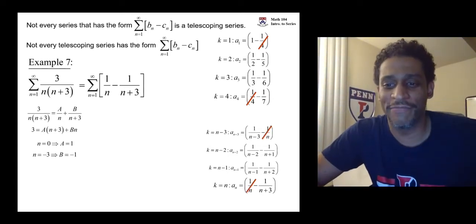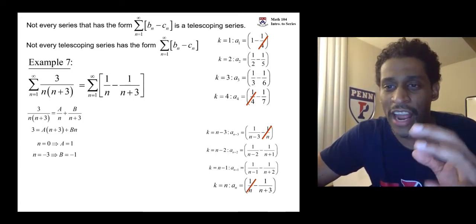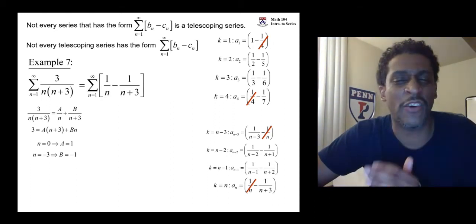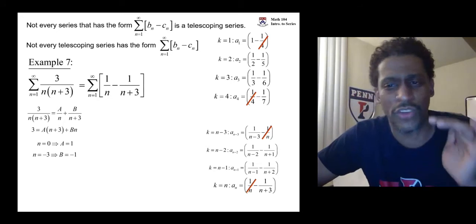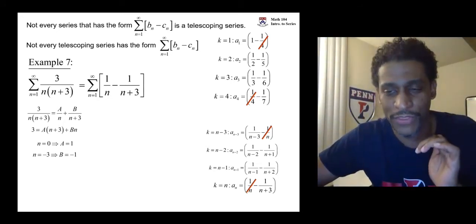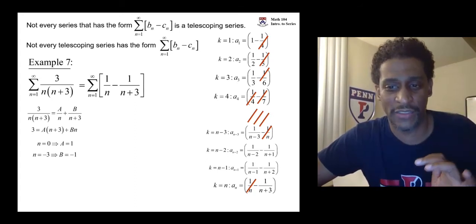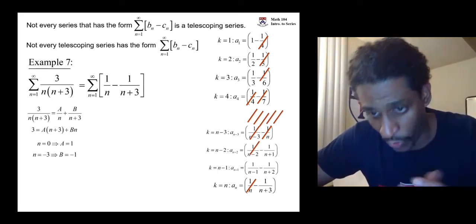It's going to be the same terms in the same position. Minus one over n and one over n, that is the last cancellation. Any counter higher than four is going to cancel. Any counter lower than n is going to cancel. You're not going to write those other terms though. Minus one fifth cancels, minus one sixth cancels, minus one seventh cancels.